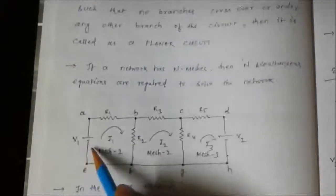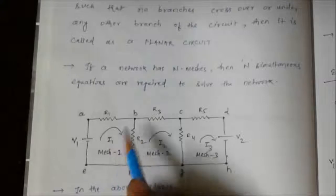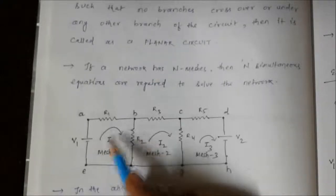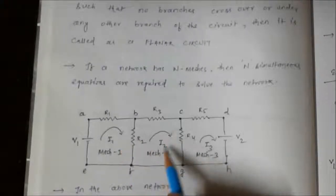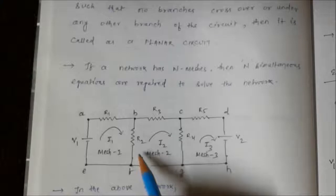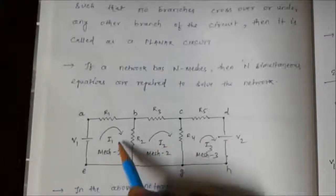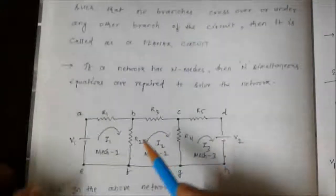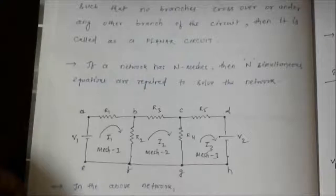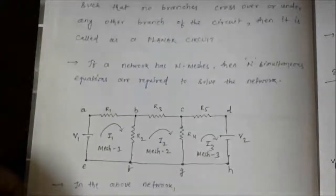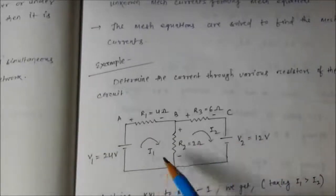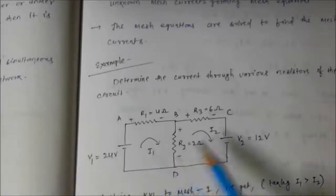Now we apply KVL: V minus i1·R1 minus (i1 minus i2)·R2 equals zero. The term (i1 minus i2) appears because i1 is flowing clockwise in mesh one while i2 flows in the opposite direction relative to that branch. We will discuss this through an example — it will be easier to understand. Let's solve a problem to understand it in a better way.